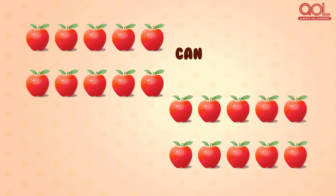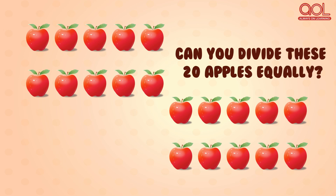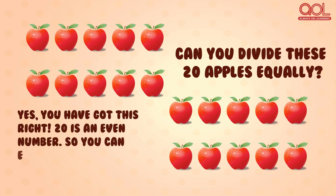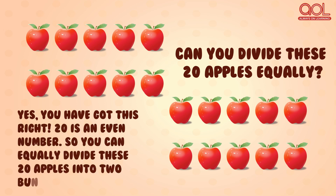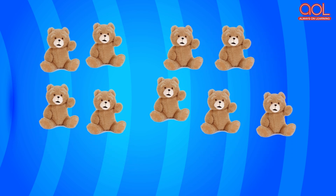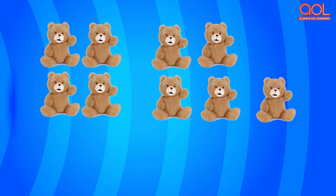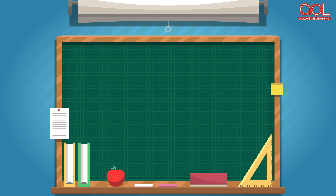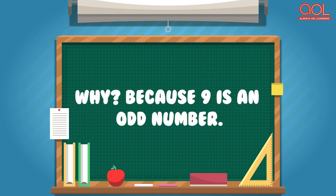Now, kids, tell me — can you divide these 20 apples equally? Yes, you've got this right! 20 is an even number, so you can equally divide these 20 apples into 2 bunches. But can you divide these 9 teddy bears equally? No! You cannot divide these 9 teddy bears into 2 equal parts. Why? Because 9 is an odd number.